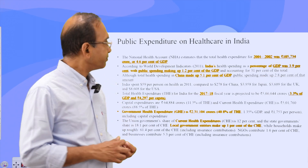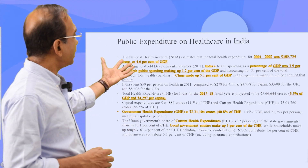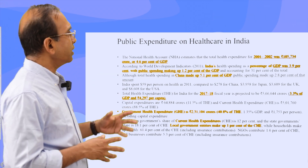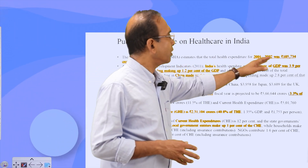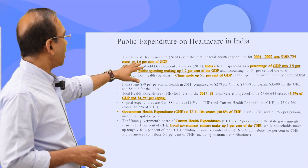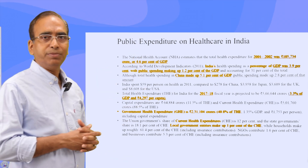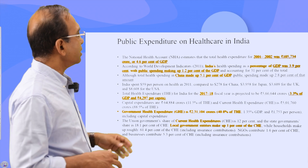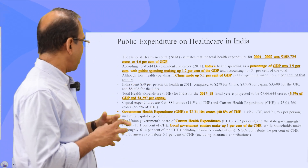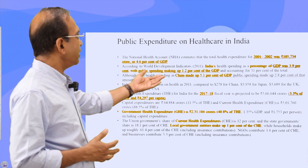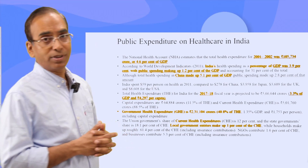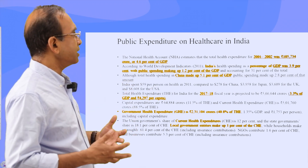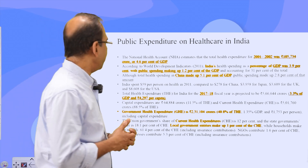Now let's come to public expenditure. In the case of national health accounts for 2001 and 2002, around 4.6% of GDP was actually spent. According to world development indicators, India's health spending was around 3.9%, with public spending making up only 1.2% of GDP. The rest is basically borne by individuals.